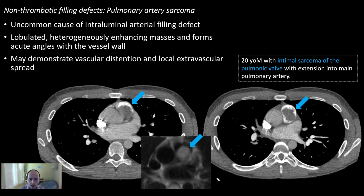This is a patient with a primary sarcoma of the pulmonary artery. Sometimes these can be more elongated and may simulate pulmonary embolism. Clues include lobulated margins, persistence over time, frequently associated pulmonary metastases, and heterogeneous enhancement of the lesion even on CT — all clues that this is not simply a pulmonary embolus.